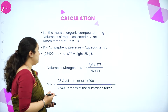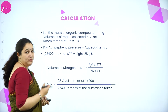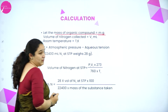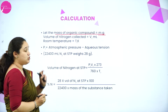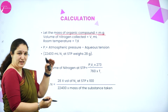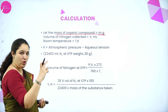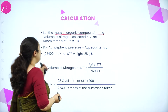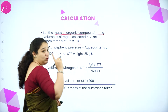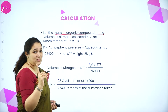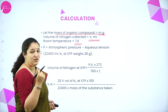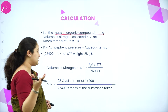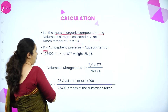Now, how do we do the calculations? Let the mass of organic compound be M grams. The volume of nitrogen collected — it's a graduated tube so you can measure the volume there — let it be V1 ml. The room temperature reading is T1 Kelvin, converted to Kelvin scale.